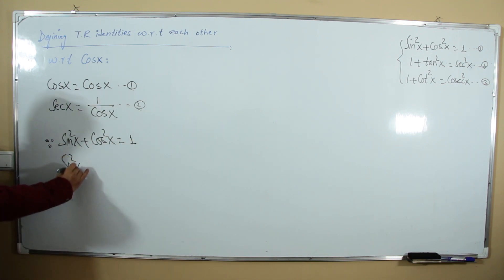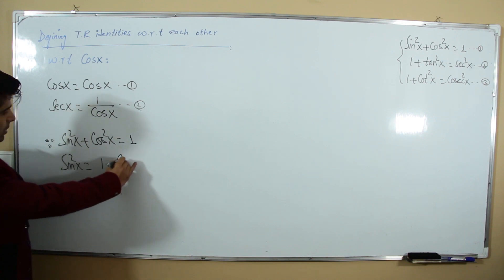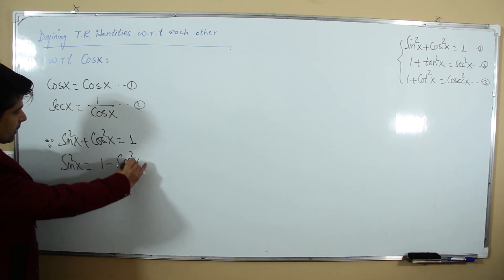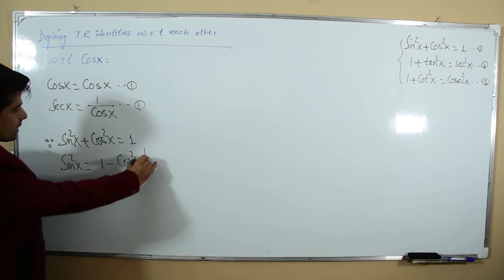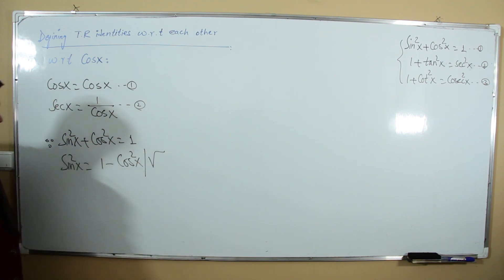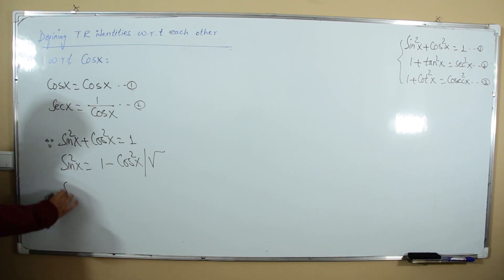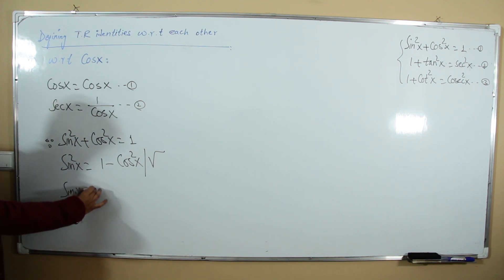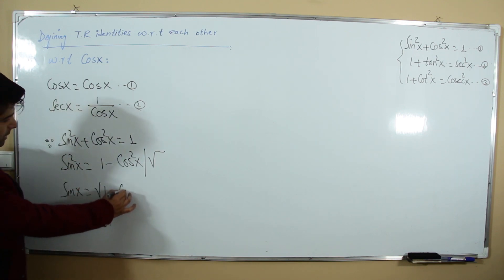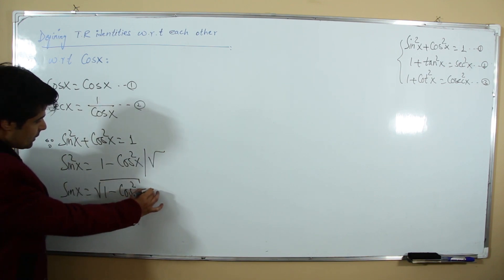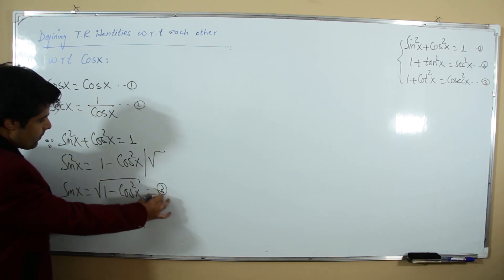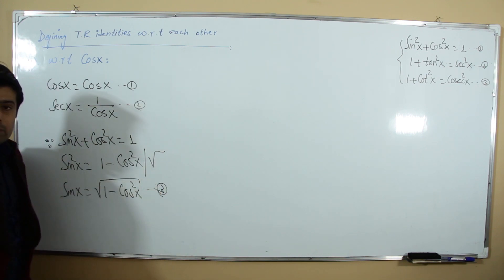From sin²x + cos²x = 1, we solve for sine: sin²x = 1 - cos²x, so sin x = √(1 - cos²x). This is our third relation.